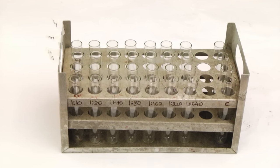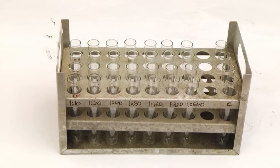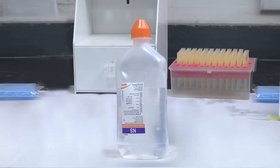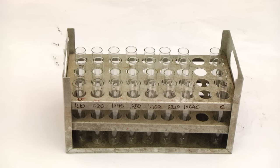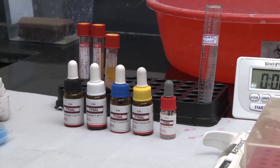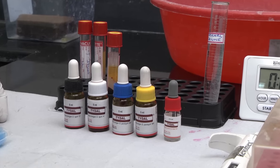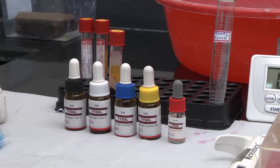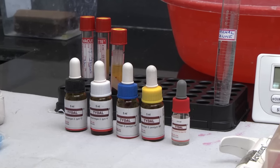Also required: 36 Widal tubes or Kahn tubes for each sample, physiological saline, and a test tube rack. Before testing, bring all reagents and samples to room temperature. Shake and mix antigens well before dispensing.